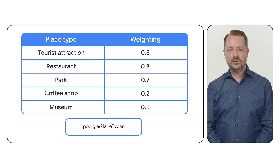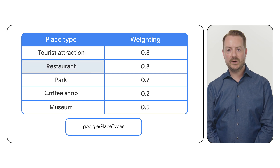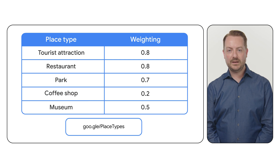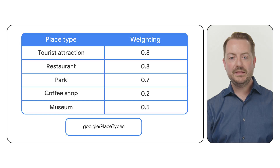For our Good for Tourist score, we might want to use places like tourist attractions, restaurants, parks, coffee shops, and museums. You can find the full list of available types in our documentation at the link below. The API will then quantify how many of these chosen types exist within your specified area.